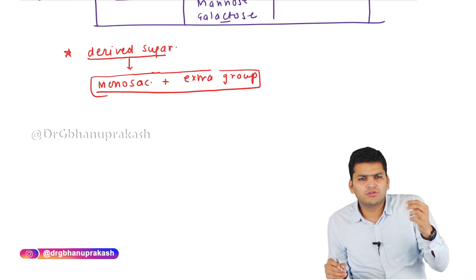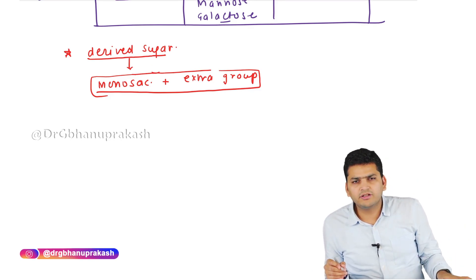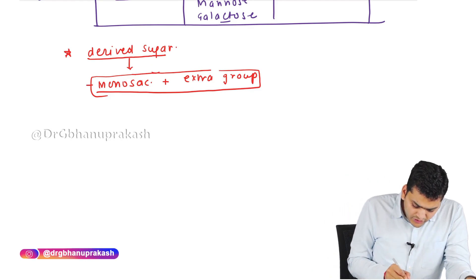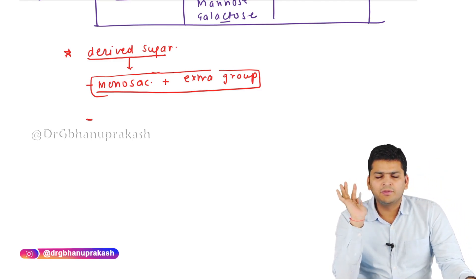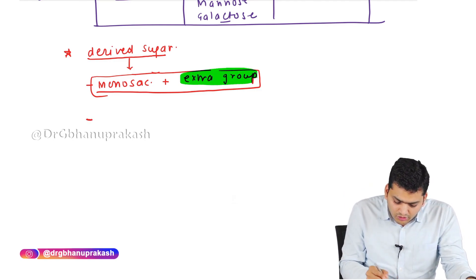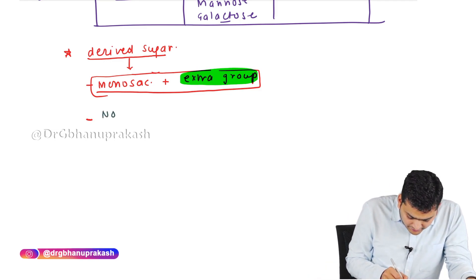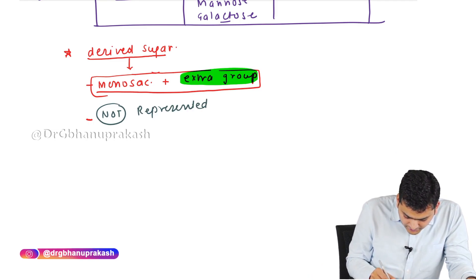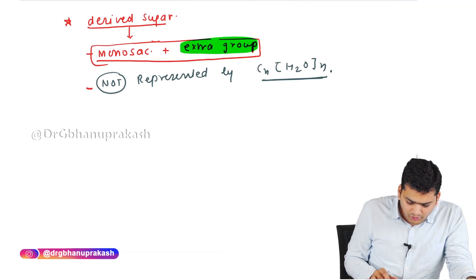Monosaccharide is represented by CnH2On, but derived sugar will not be represented by this formula, because something extra has been added to the monosaccharide. So derived sugar is not represented by CnH2On.